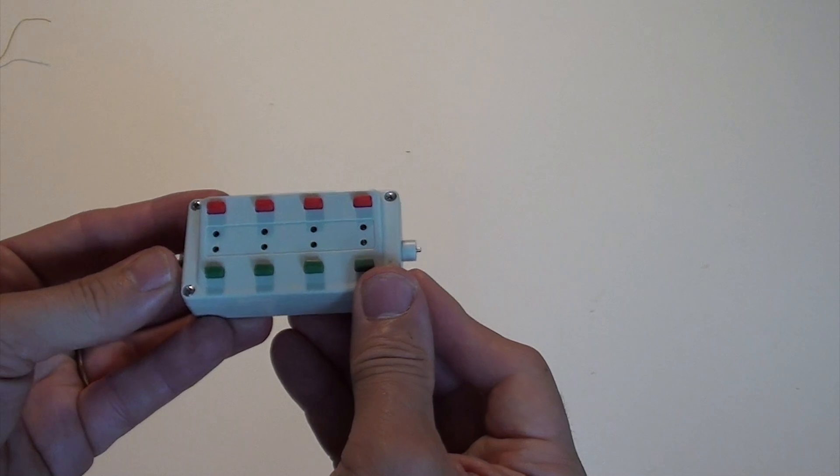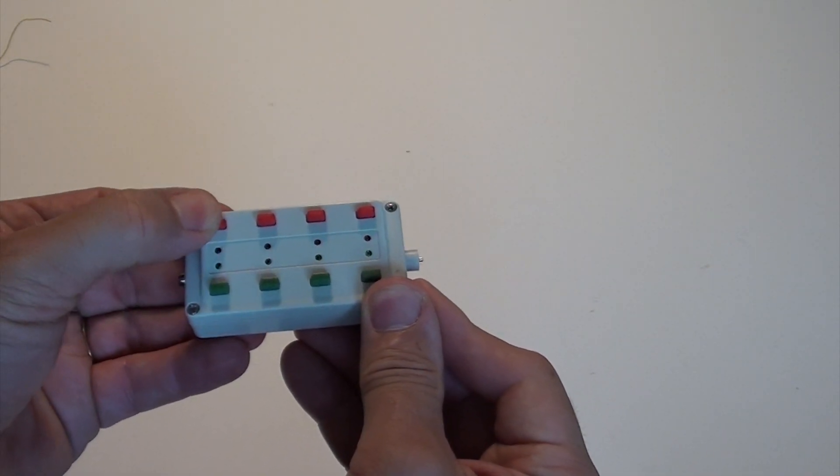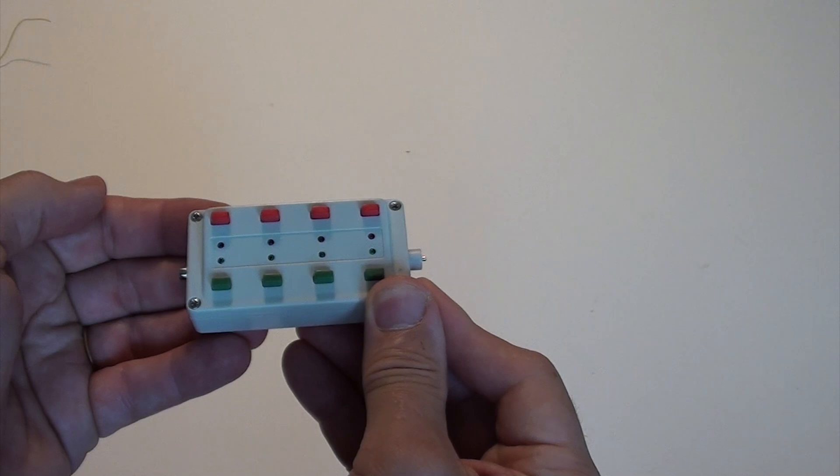Four turnouts or four sets of buttons. Green to set your turnout straight, and red to set it to the curved position.